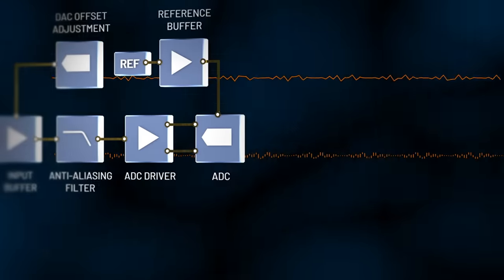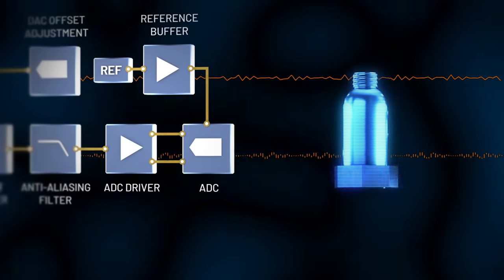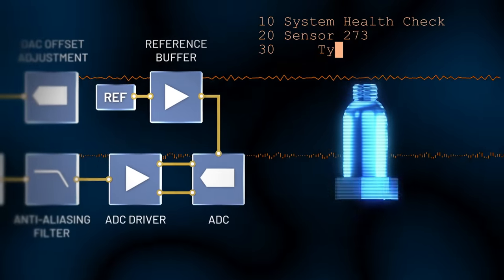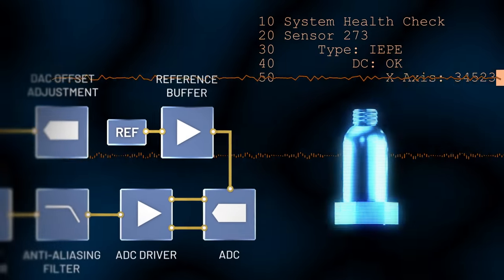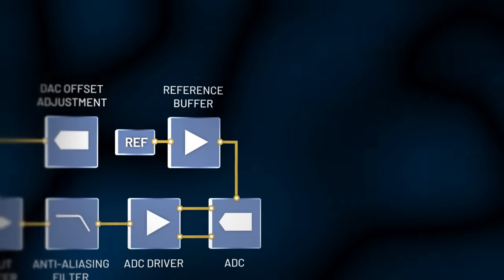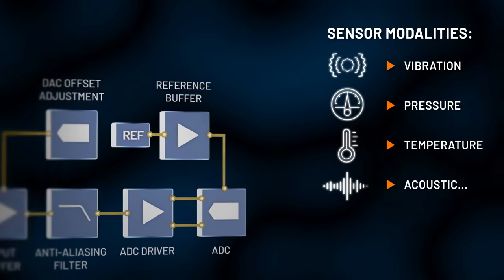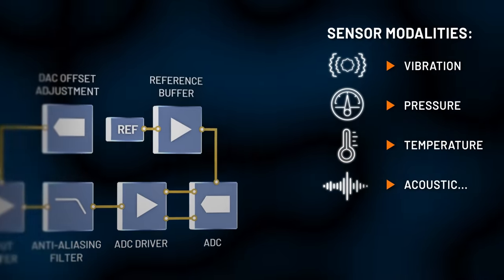The preservation of DC information makes this signal chain suitable for both monitoring the health of the IEP sensor and combining data from a variety of other sensor types.